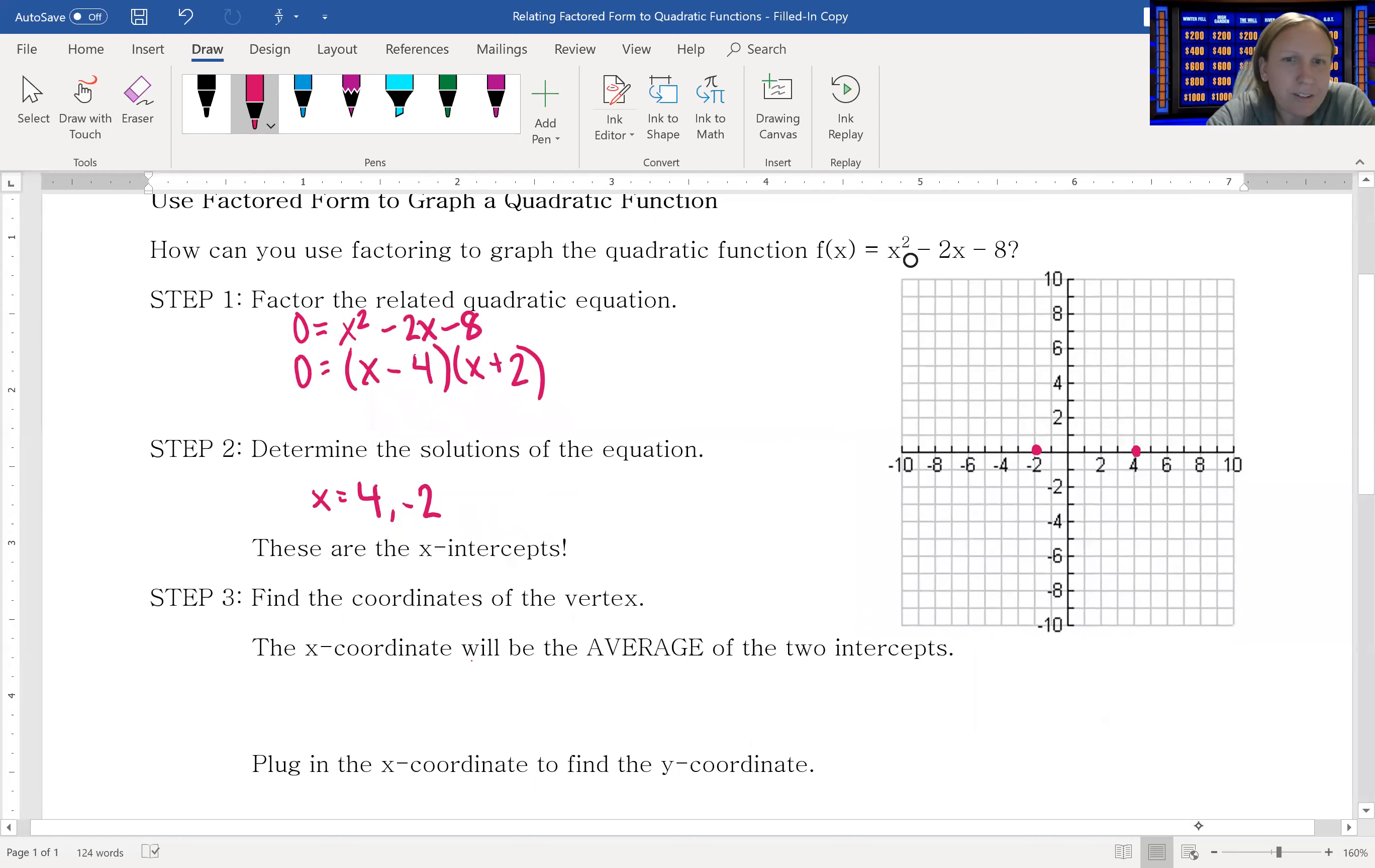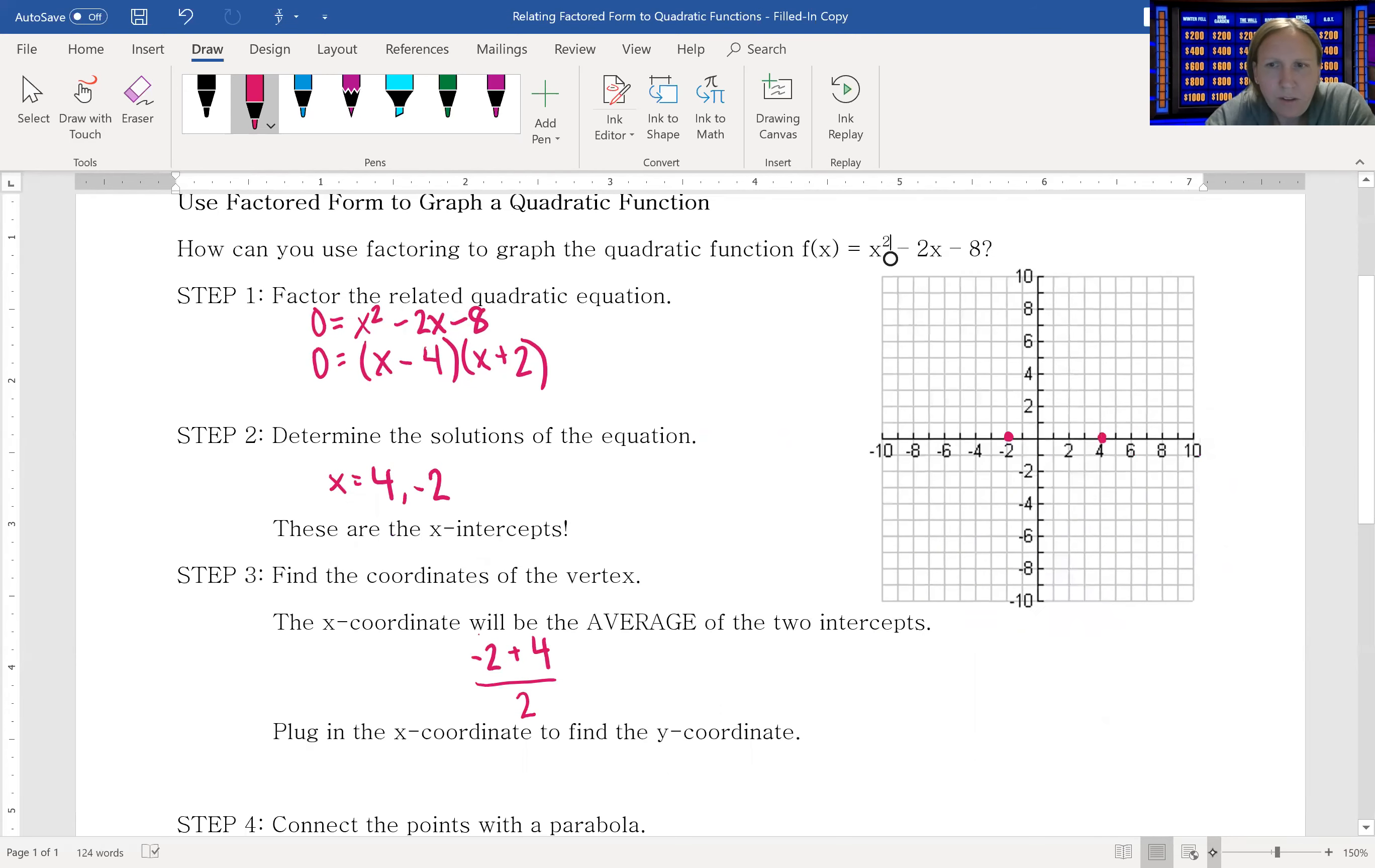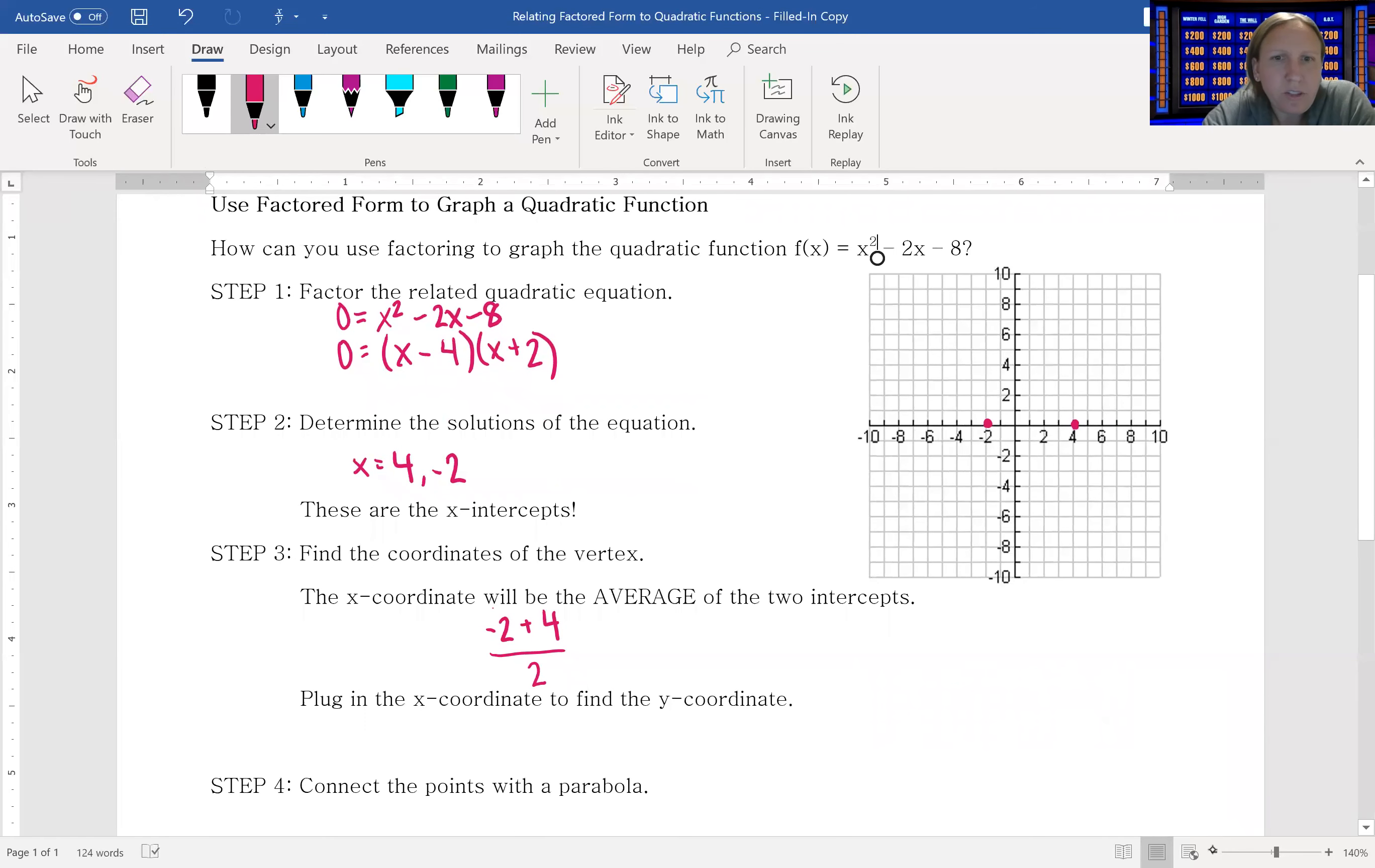I can add together -2 and 4, which are my two intercepts, and take that sum and divide it by 2. That's how you calculate average. So -2 + 4 is 2, 2 divided by 2 is 1. We already said that the axis of symmetry was going to be at x = 1.